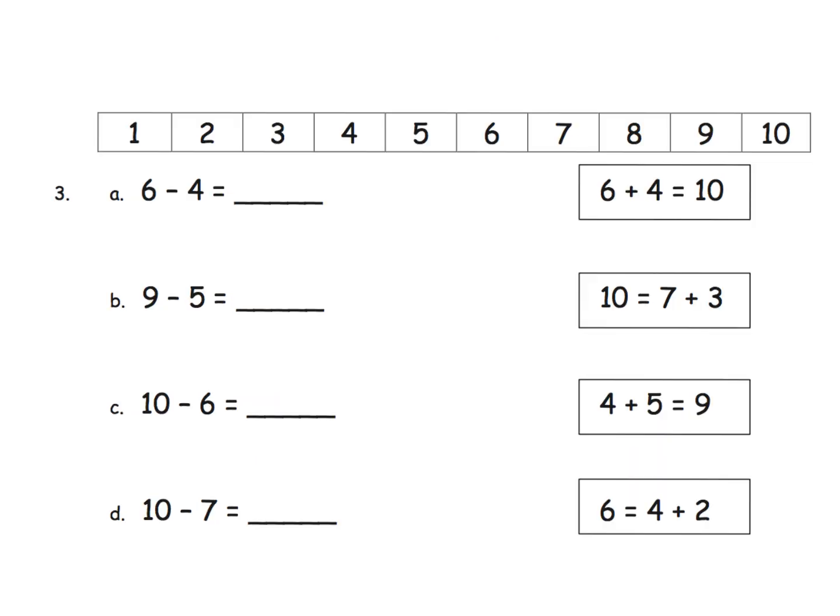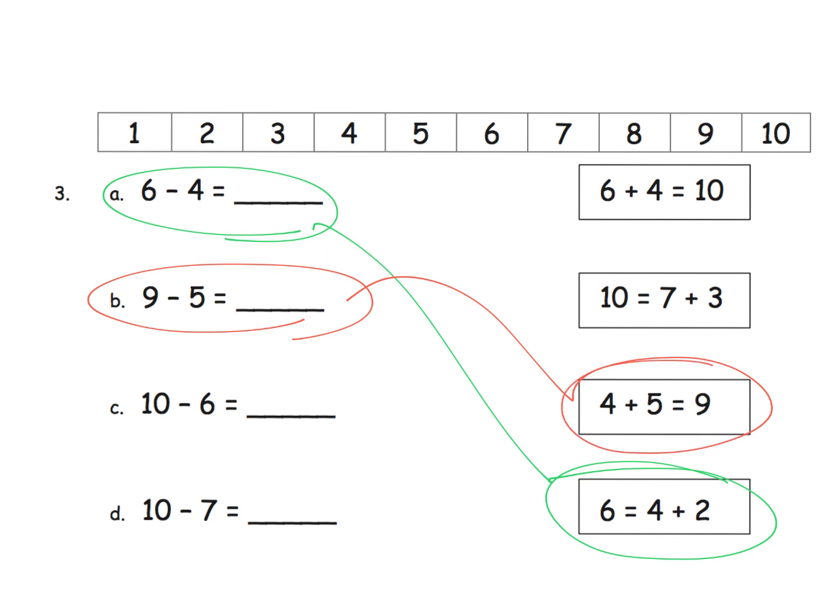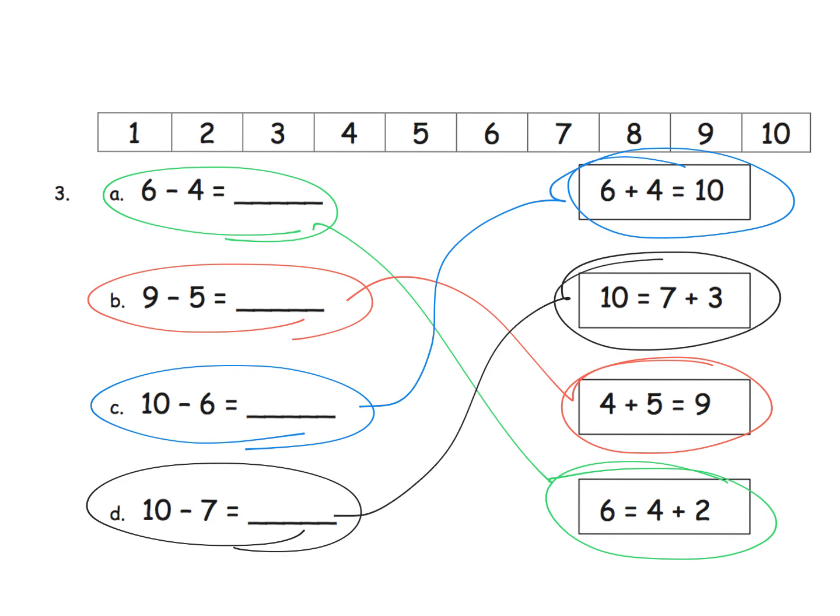Same idea, only this time they also want us to be connecting the subtraction problem with its addition problem. So 6 minus 4 is what? So that means these guys go together. And then 9 minus 5, so that goes right here. And then 10 minus 6, that goes here. 6 plus 4 is 10. And then the last one, 10 minus 7, goes right here, as in 10 is equal to 7 plus 3. Of course, parents and teachers, we'd be using the hops if necessary.